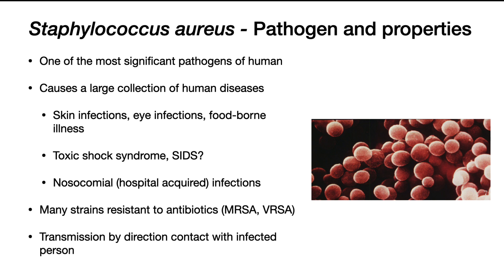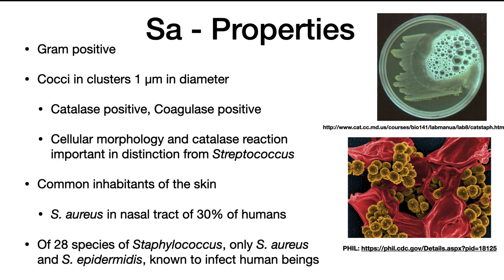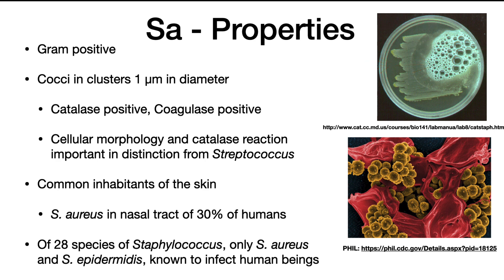Transmission is by direct contact with an infected individual. Staphylococcus aureus is a gram-positive cocci of about 1 micron in diameter. It forms grape-like clusters, and the word staphyle in Greek means a bunch of grapes. Staphylococcus aureus is catalase-positive, and the catalase reaction is important in distinguishing it from another important genus of pathogens, the streptococci. Staphylococci are common inhabitants of the skin. They are facultative, with lactic acid being an end-product of sugar fermentation, but will perform oxidative phosphorylation when oxygen is present.